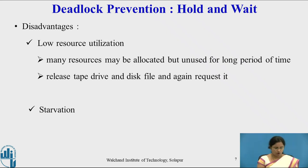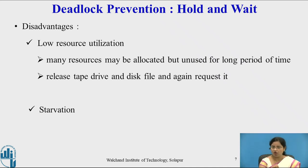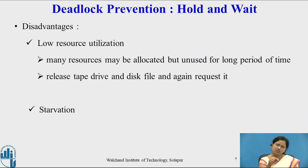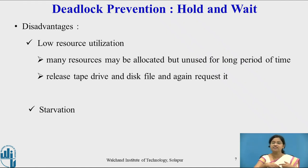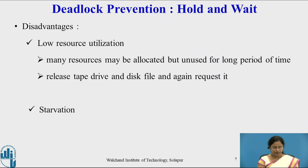Starvation may also occur. In Protocol 1, all resources are allocated to a process with a long burst time, causing other processes that request those resources to enter a waiting state for a long period until execution completes. Processes keep entering waiting states, and their waiting never ends, leading to starvation in the system.